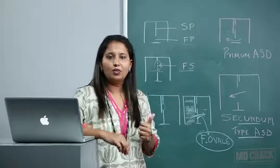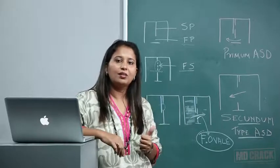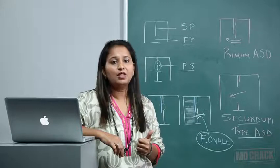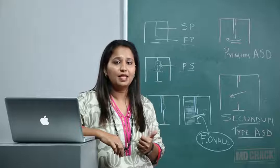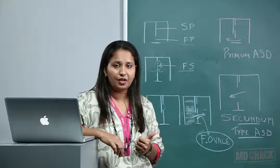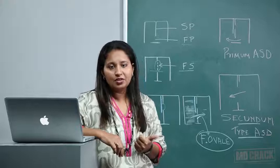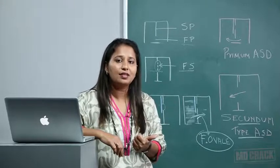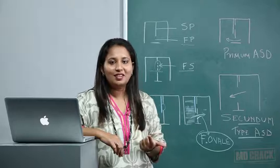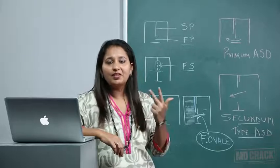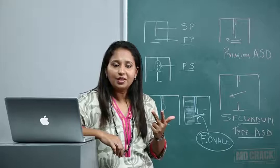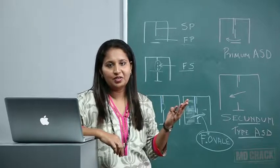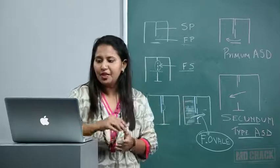ASD, VSD, and PDA are all left-to-right shunts — they will not give early cyanosis but may give late cyanosis. They are called acyanotic congenital heart diseases. The cyanotic congenital heart diseases are all the T's: transposition, truncus arteriosus, tetralogy of Fallot, and tricuspid atresia.